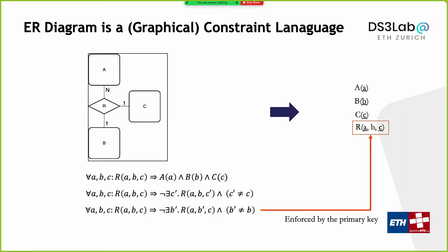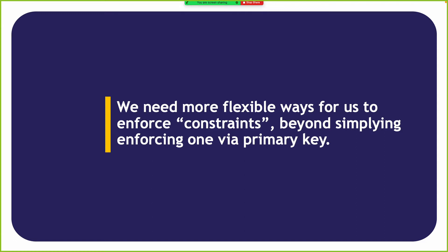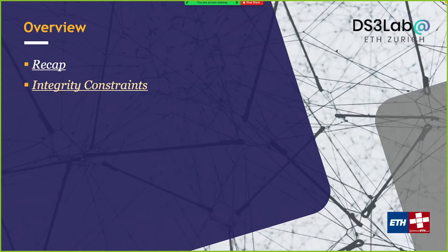That leaves us with the question of what should we do with the other constraints. You can just ignore them, but if it's really important to encode them, we need to define some new concept — a new tool — to specify all those constraints in a more flexible way, going beyond simply enforcing them with a primary key. That is what we are going to talk about today: introducing the notion of integrity constraints, and how to implement them inside a SQL database.